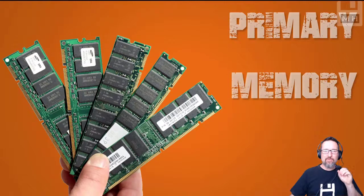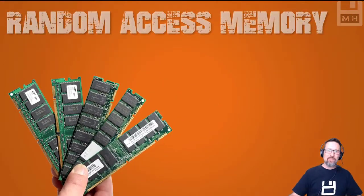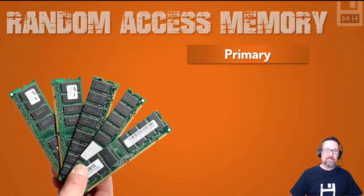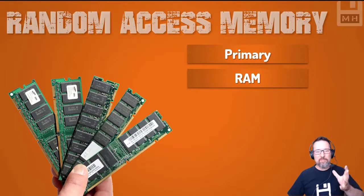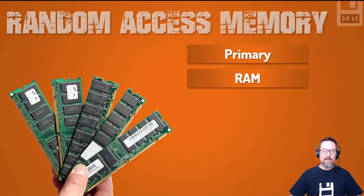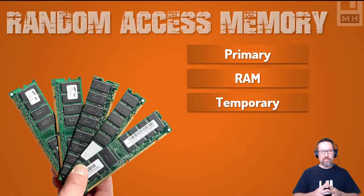Our first kind of storage is primary storage, also known as random access memory. Primary means number one — the first thing. It's the first type of memory that gets accessed when we switch on our computer, when everything gets put into RAM. RAM is temporary — don't forget that.